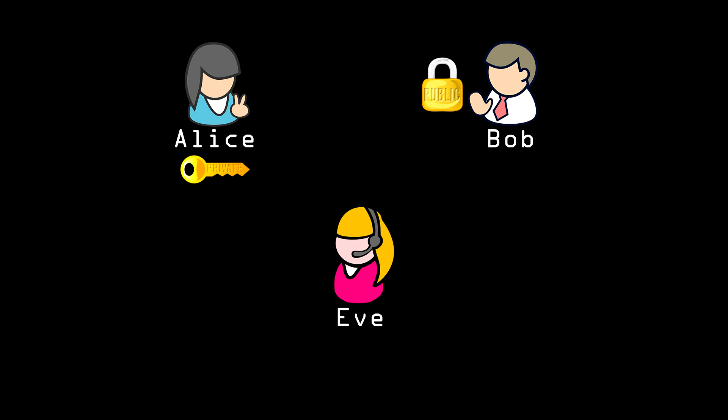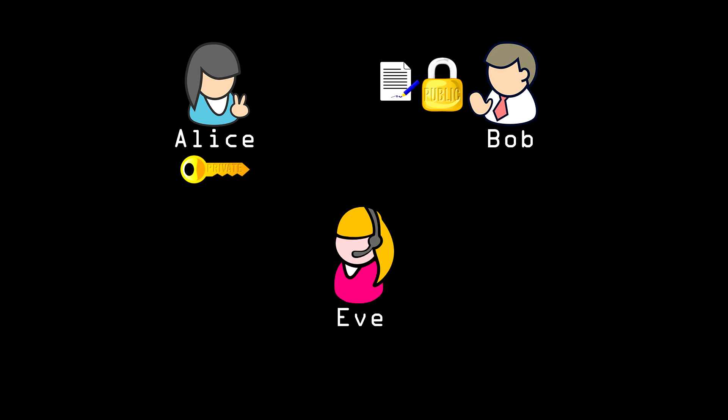Private key encryption also gives us the ability to verify that a message was written by the person we want to be talking to. Bob has Alice's public key, but he wants to make sure it's Alice and not Eve pretending to be Alice. So he has Alice send him a message — this doesn't have to be encrypted — that is digitally signed using her private key. Bob can then verify the signature using Alice's public key.